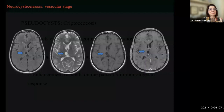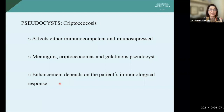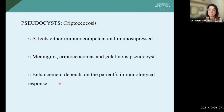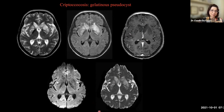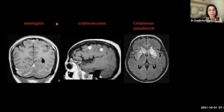Pseudocyst: you have cryptococcus. The cryptococcus can affect both immunocompetent and immunosuppressed patients. We have shown the case of meningitis, the case of cryptococcoma, and this third form of presentation — the gelatinous pseudocyst. This lesion comes from the meninges to the perivascular spaces into the parenchyma. It may or may not present enhancement. Usually they have hyperintensity on T2; on FLAIR, they do not have the same signal intensity as the CSF — they have hyperintensity. They may sometimes enhance and do not present restricted diffusion. To summarize, cryptococcus can cause on the central nervous system: meningitis, cryptococcomas (granulomas inside the parenchyma), and gelatinous pseudocysts from the perivascular spaces.